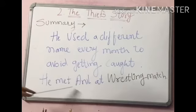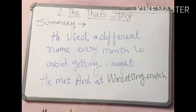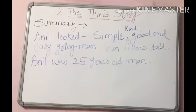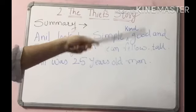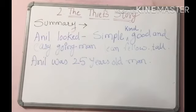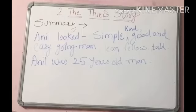Hari met Anil at a wrestling match for the first time. Anil was fond of wrestling matches, and Hari Singh found his new target there. Anil was a simple, kind, good, and easy-going man. He was lean, very tall, and 25 years old, and he liked wrestling very much.